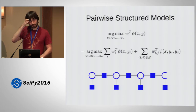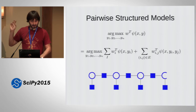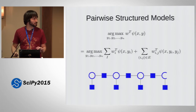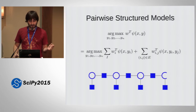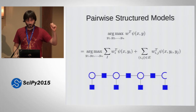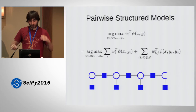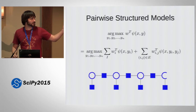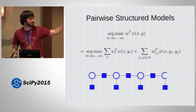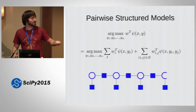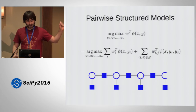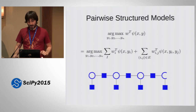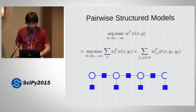One example of a model that works like this is a hidden Markov model or a conditional random field, where these round nodes are the y's you want to observe and these square nodes correspond to what we call unary and pairwise potentials — the parts that work on one of the y's and the parts that work on two of the y's.